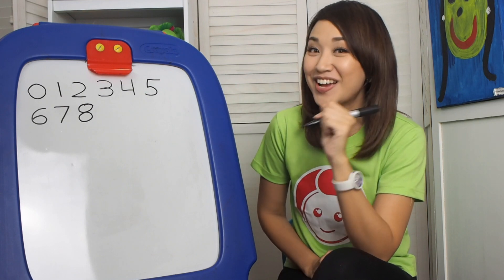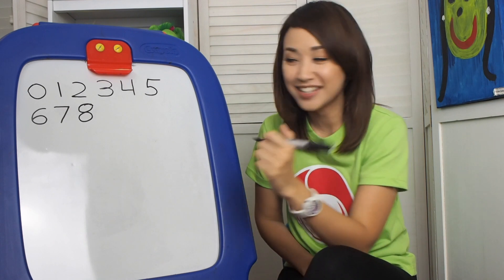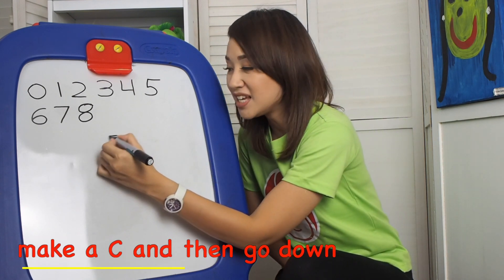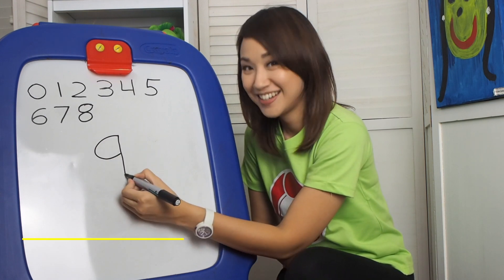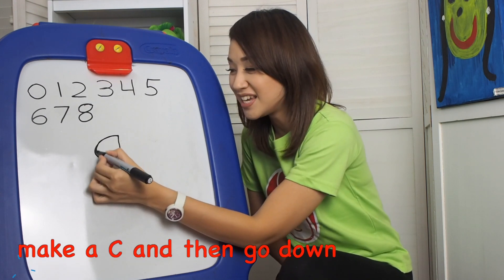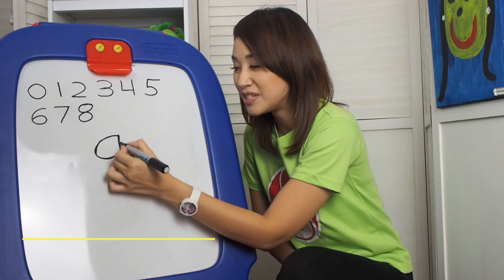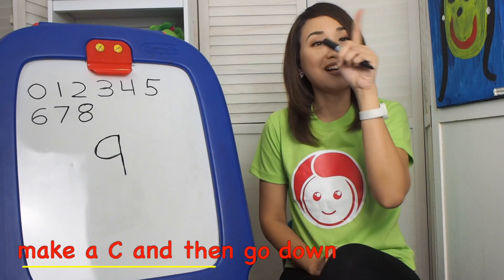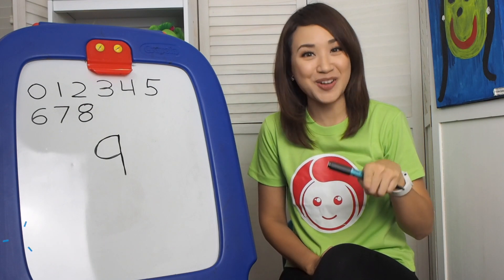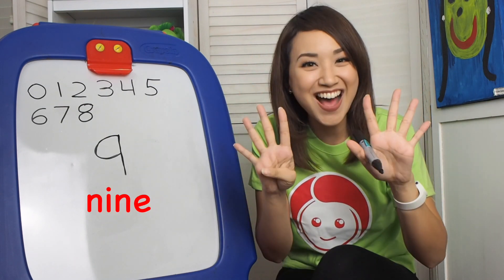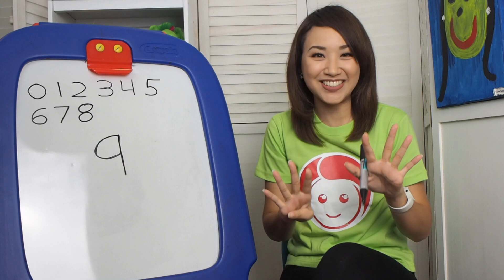What is after number 8? Good job! Number 9. So how do we write number 9? Make a C and then go down. Make a C and then go down to make the number 9! Very good!